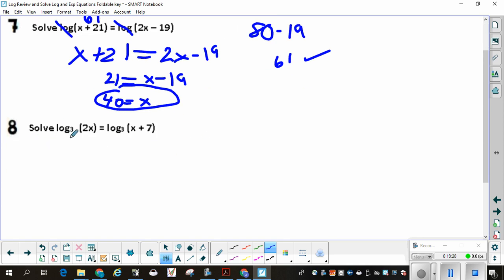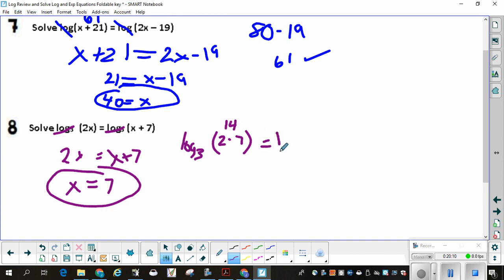Finally, we have problem number 8. Log base 3 of 2x is equal to log base 3 of x plus 7. This can cancel with this. I don't have anything else. It's just a log equals a log. So now I have 2x equals x plus 7. Subtracting x from both sides, x is equal to 7. Check it: log base 3 of 14 is equal to log base 3 of 14. It checks.